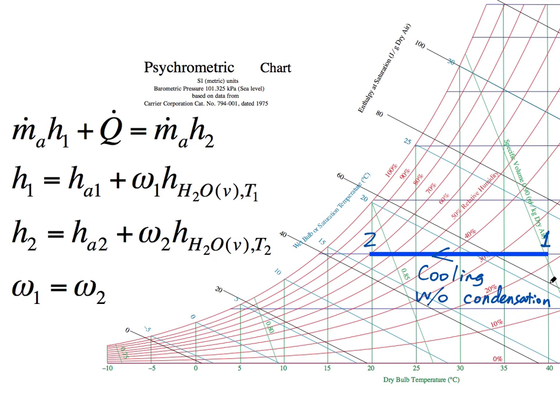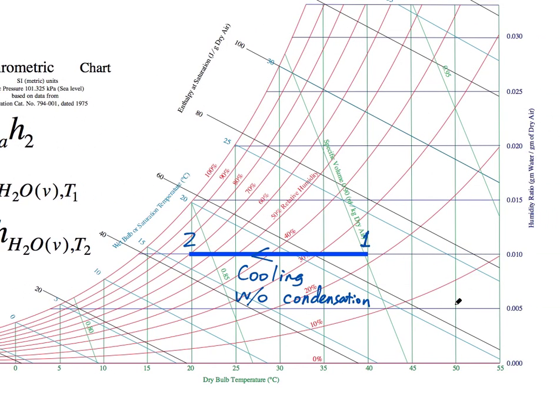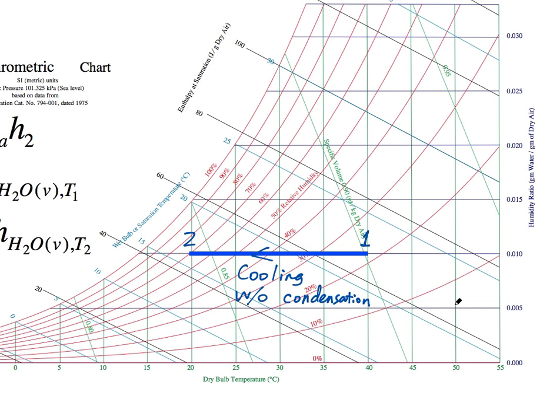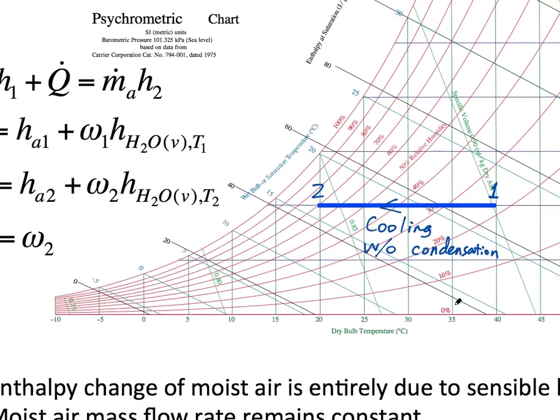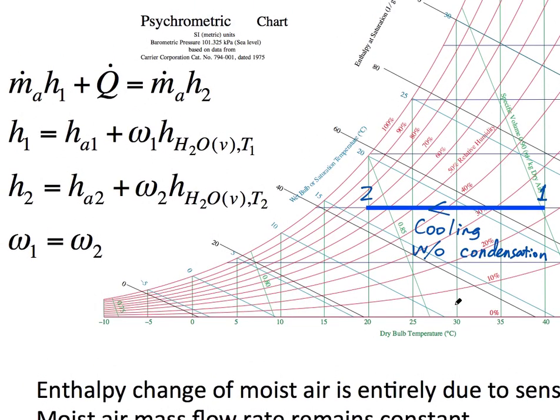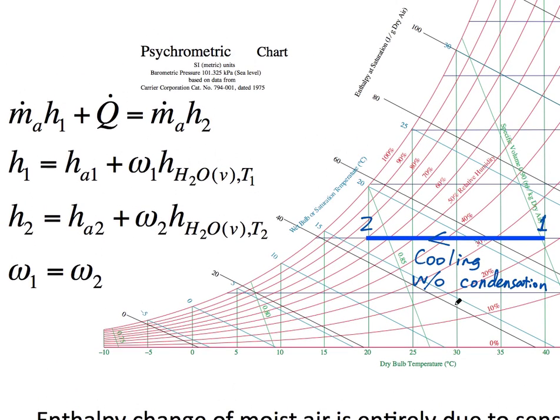This is a 0.01 humidity ratio condition, cooling with no condensation, or cooling with constant humidity ratio.